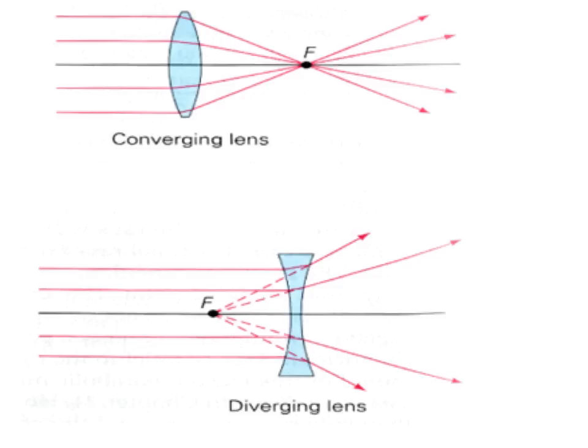For P3 we need to be aware of two broad types of lenses. The first of these is the converging lens and the second is our diverging lens.